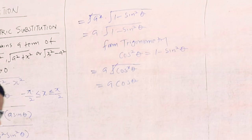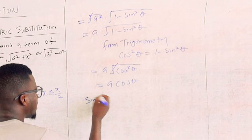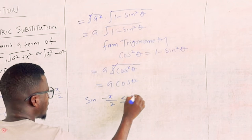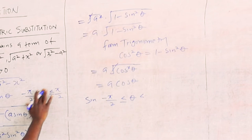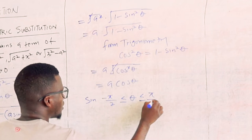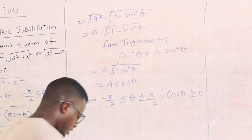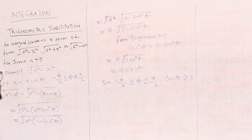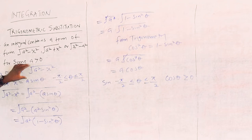So since minus pi over 2 is less than or equal to theta is less than or equal to pi over 2, cos theta is greater than or equal to zero. So the square root of a squared minus x squared simplifies to a cos theta. This is how we solve an integral that has this form using trigonometric substitution.